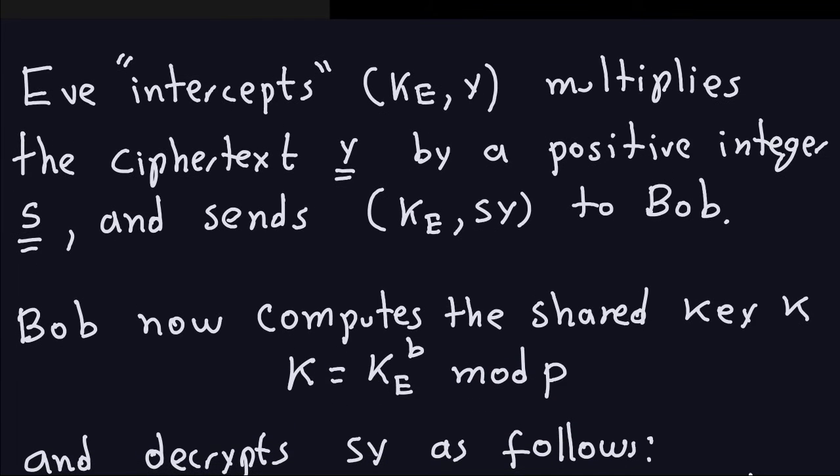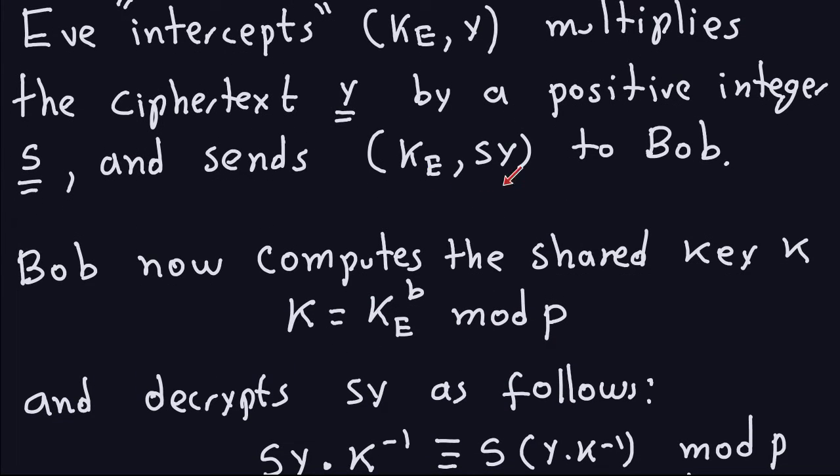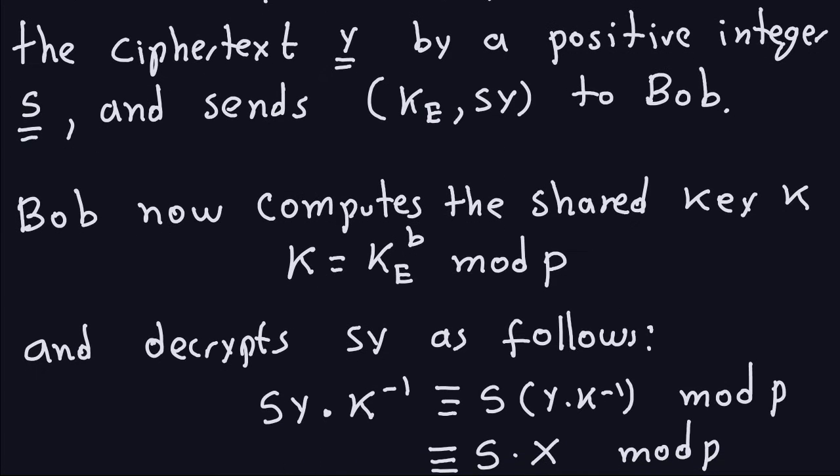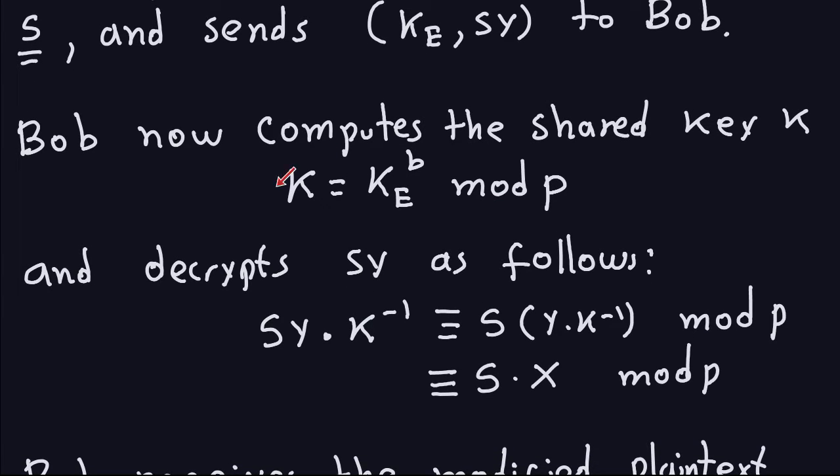So when Bob gets that message that was changed by Eve, Bob is now going to compute the shared key, which is what he has to do to do the decryption. And remember what that is, you take the ephemeral key to the exponent b, and this is the exponent that Bob computed. This is a random number between 2 and b minus 2. That's how you compute the shared key. The reason he has to do that, because that shared key is used for decryption. So remember the decryption is you take the ciphertext, which in this case is S times Y, because this was changed by Eve. But Bob doesn't know that. Bob doesn't know that it was changed. So for Bob this is just Y. But in reality it's S times Y because it was changed by Eve.